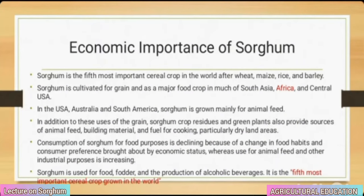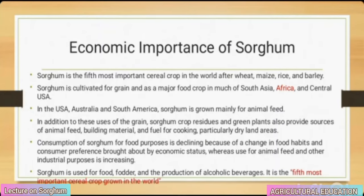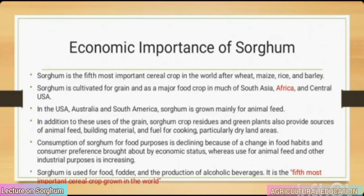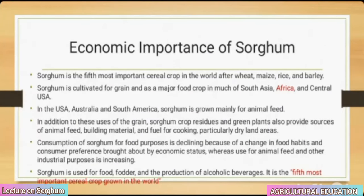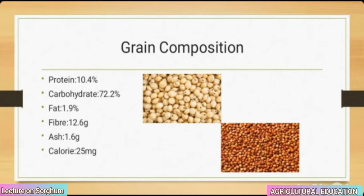Sorghum is the fifth most important cereal crop in the world after wheat, maize, rice and barley. It is cultivated for grain and as a major food crop in much of South Asia, Africa and Central America. In the US, Australia and South America, sorghum is grown mainly for animal feed. Crop residues and green plants also provide animal feed, building material and fuel for cooking, particularly in dryland areas. Grain composition: protein 10.4%, carbohydrates 72.2%, fat 1.9%, fiber 12.6 g, ash 1.6 g.